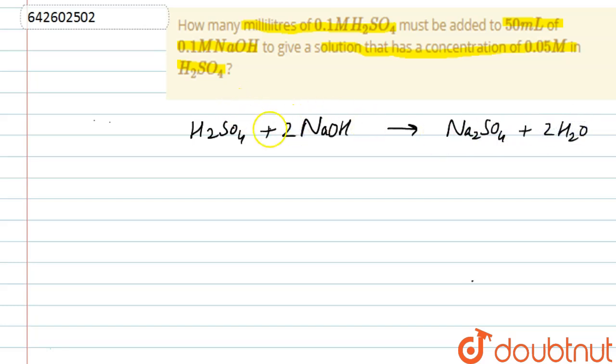Now we know that formula for molarity is number of moles of solute divided by volume of solution in ml. We know number of moles of solute gives us millimoles, so we can write it as molarity is equal to number of millimoles of solute divided by volume of solution in ml.